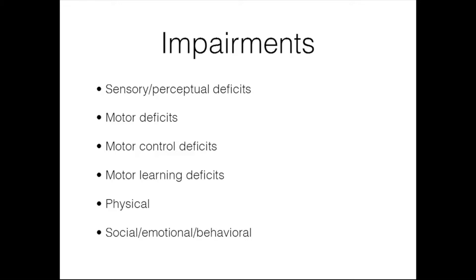Secondary impairments often associated with DCD include physical impairments such as lack of energy, fatigue, and decreased strength — these kids are tired and it takes a lot of energy to perform movements. We also see social, emotional, and behavioral impairments: kids with DCD often tend to be quiet and withdrawn, showing avoidance behaviors and sometimes acting out to avoid gross motor tasks. They often have low frustration tolerance, decreased motivation, and poor self-esteem.